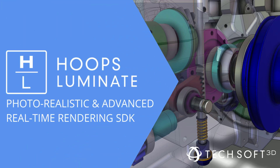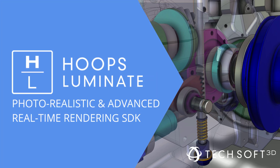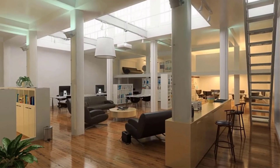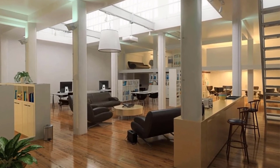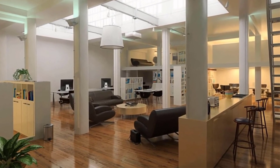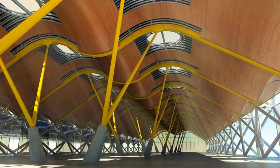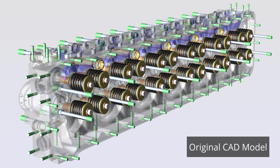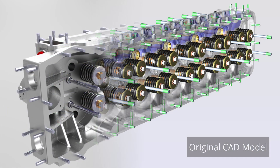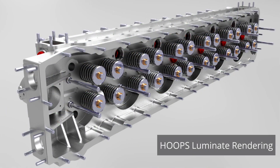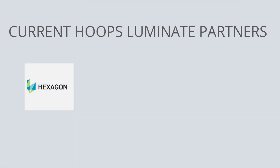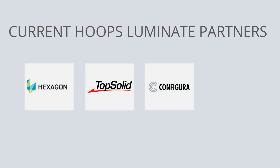HOOPS Luminate is a graphics SDK that equips 3D engineering applications with the ability to create stunning photorealistic imagery and provide advanced real-time renderings across a wide range of platforms and industries. HOOPS Luminate is trusted by industry leaders like Hexagon, TopSolid, Configura, SolidWorks, and more.